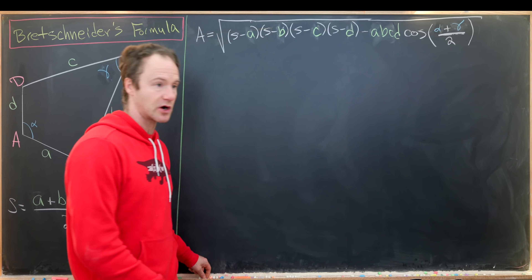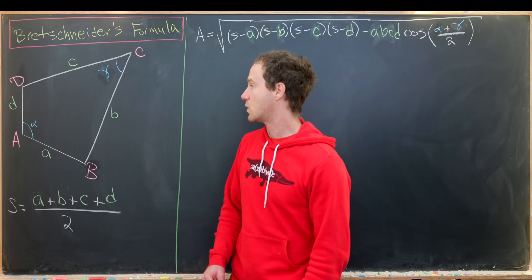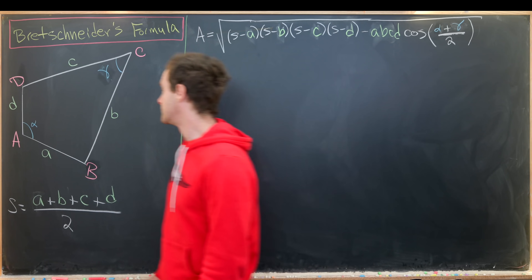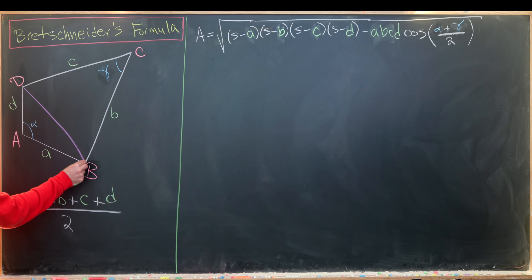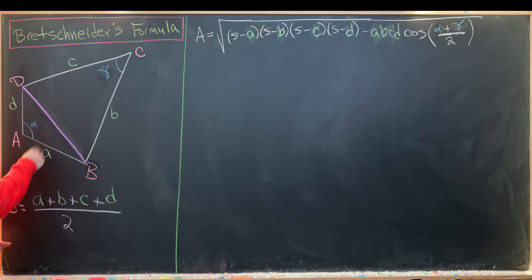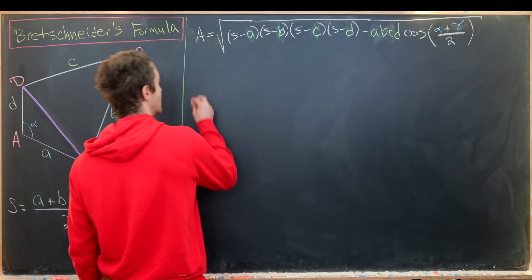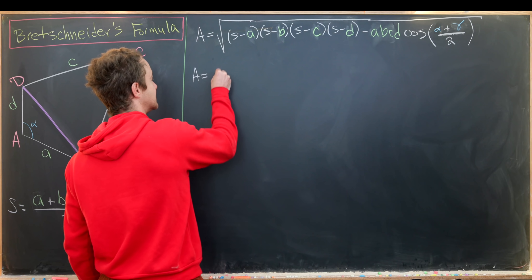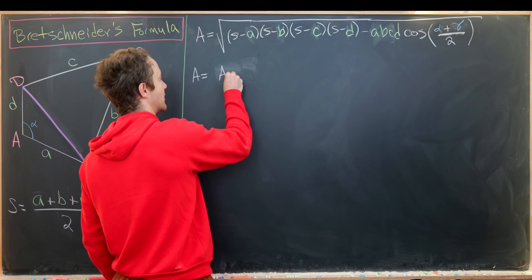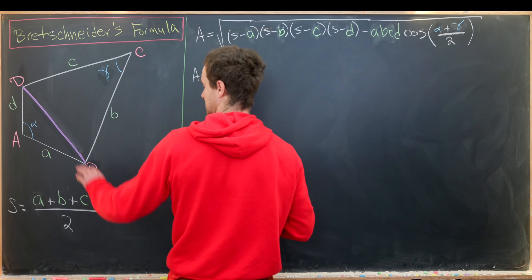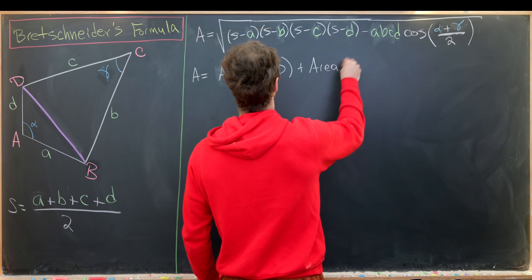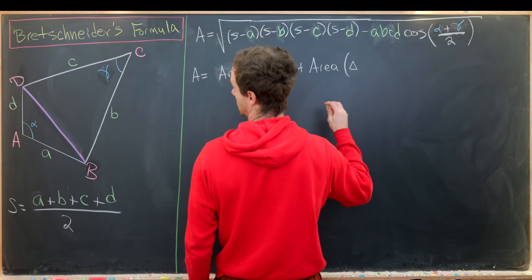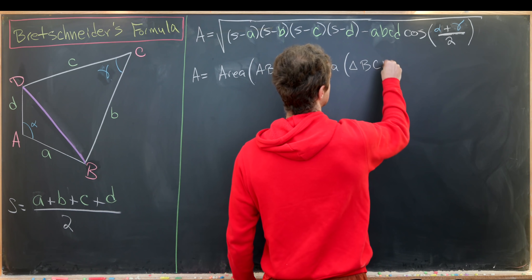We're going to start by partitioning this quadrilateral into two triangles by connecting a line segment between B and D. Now we have two triangles, and the total area is the sum of their areas: area of triangle ABD plus the area of triangle BCD.